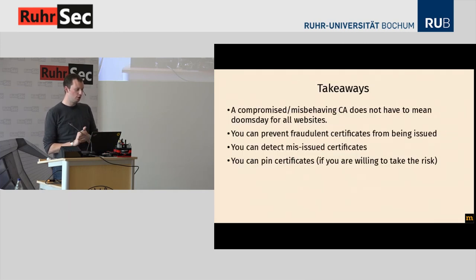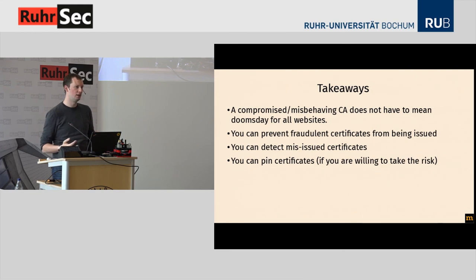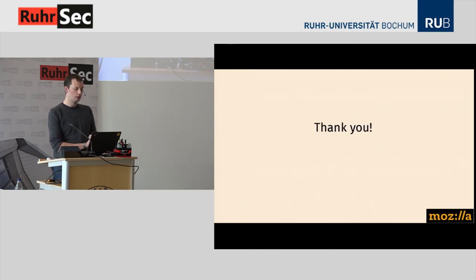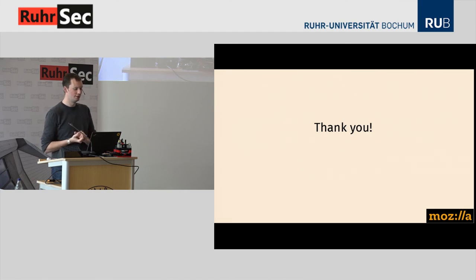Moving on, the takeaways: just a few years ago, a compromised or misbehaving CA — and there have been numerous examples — was kind of a doomsday scenario and we wouldn't really know what to do. But nowadays we can actually prevent fraudulent certificates from being issued. We can detect misissued certificates. And if you're willing to take some risks and have good backup strategies, we can also pin certificates. That's it for my presentation — thank you very much for your attention, and a big shout out to the people at RuhrSec for running a non-profit security conference.